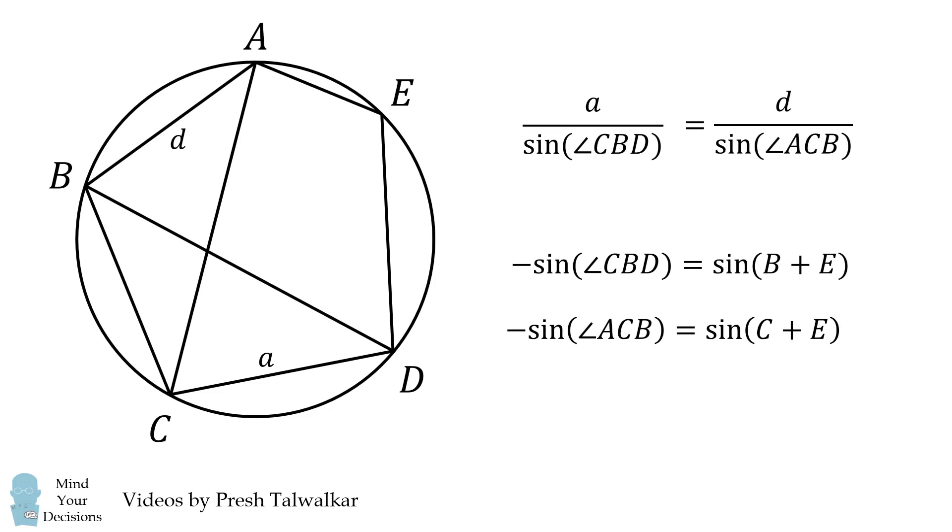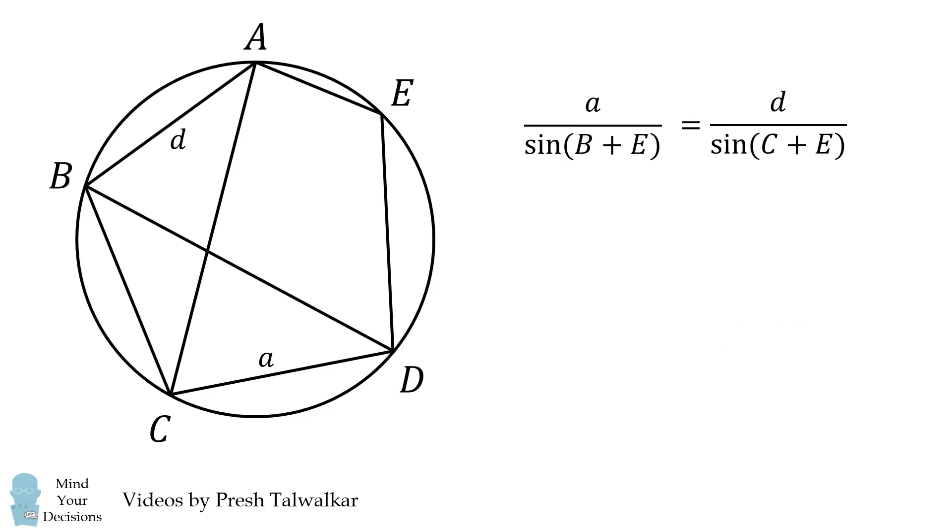We're almost there. We multiply the top equation by negative 1 on both sides. We then substitute in what we derived, and we get what we need to show. And that's going to be it. QED. I think this was an incredible question because you really have to know your geometry and trigonometry to get the final proof.